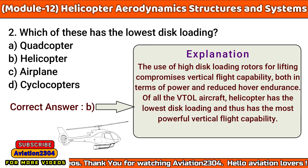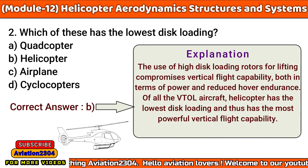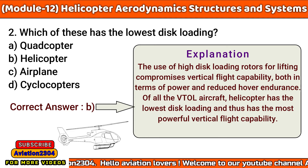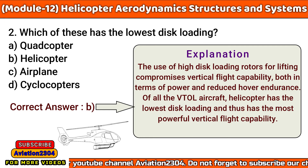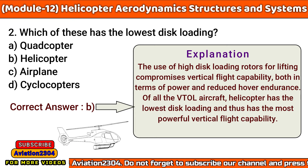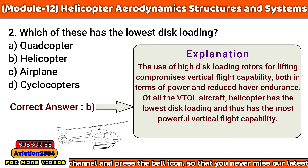Which of these has the lowest disc loading? A. Quadcopter, B. Helicopter, C. Airplane, D. Cyclocopters. The correct answer is B. The use of high disc rotors for lifting compromises vertical flight capability, both in terms of power and reduced hover endurance. Among all VTOL aircraft, helicopters have the lowest disc loading and thus have the most powerful vertical flight capability.